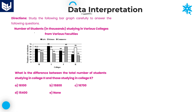First of all, we need to read the information carefully and then we need to solve the questions according to the given information. Here the information is about the number of students studying in various colleges from various faculties — the total number of students studying in colleges H, I, J, and K. All the values are given in terms of thousands.